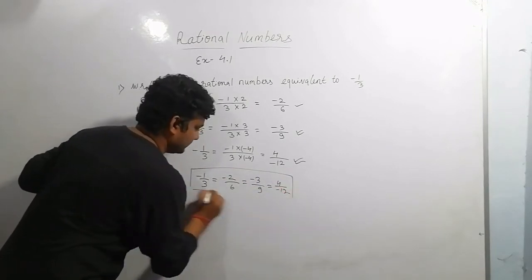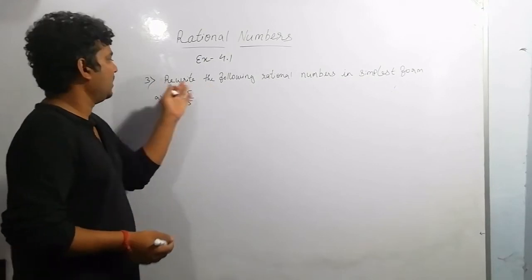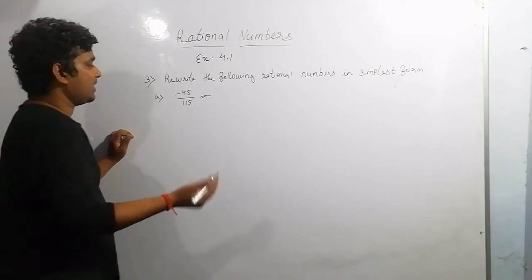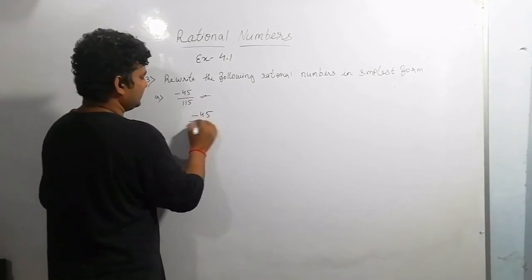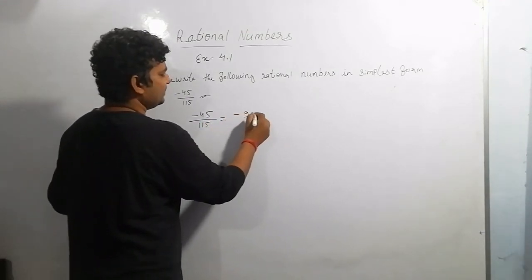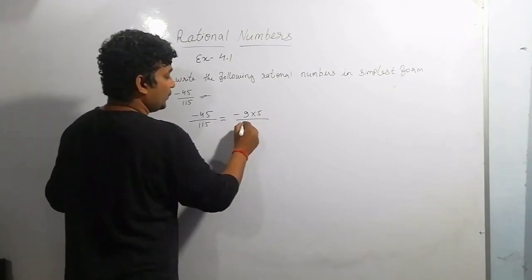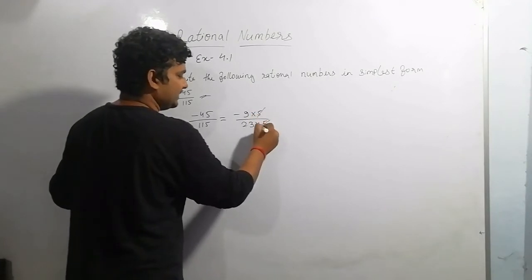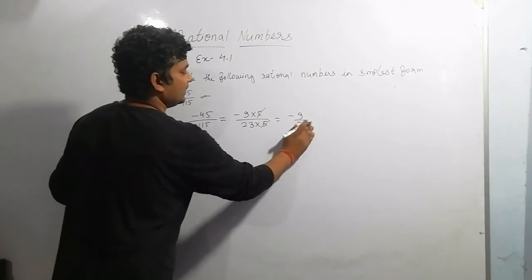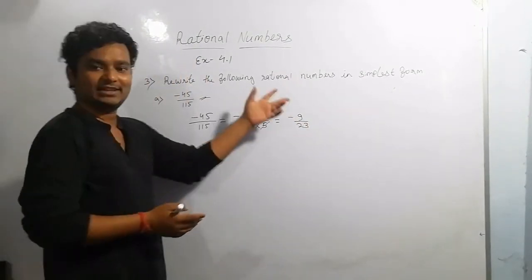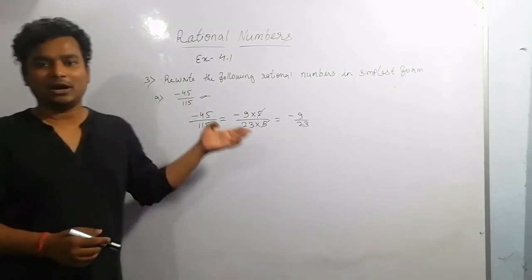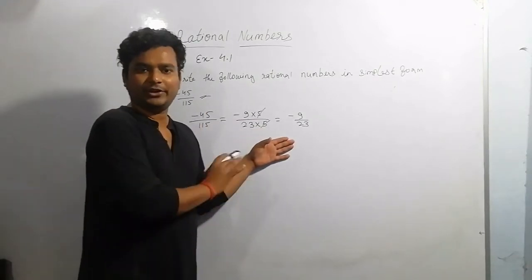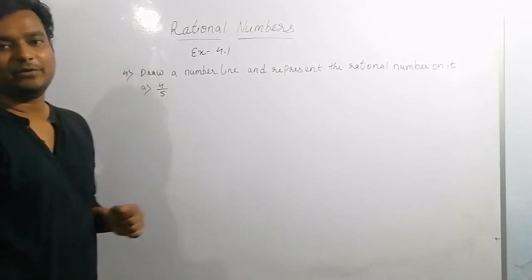Now coming to Question 3: rewrite the following rational numbers in simplest form. Taking minus 45 by 115 — we can write 45 as 9 multiplied by 5 and 115 as 23 multiplied by 5. We cancel the common factor 5 from numerator and denominator, giving us minus 9 by 23. This is the simplest form. For Question 2, you compare the numbers using the same method of finding and eliminating the common factor.